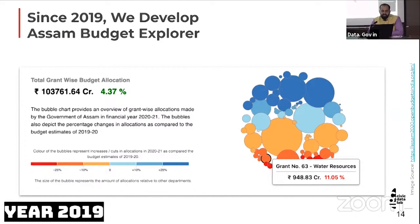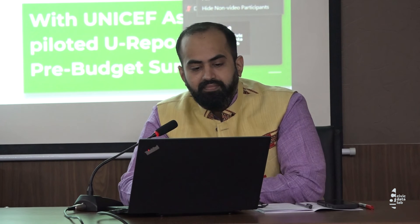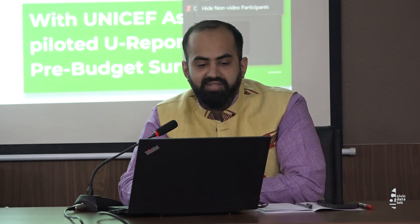Following this announcement, even Odisha has started to publish their machine-readable budget data publicly. With the help of this machine-readable data published in 2019, we built the Assam Budget Explorer — a visualization tool where you can explore budget data in a much easier manner. Every year, we update it to include updated information on the Assam Budget, in both English and Assamese. It's a bilingual tool. In 2020, we worked with UNICEF Assam to pilot two report-based budget surveys, targeting youth of Assam to submit their budgetary suggestions. What you are seeing in the dashboard is the budget suggestions coming from public health.